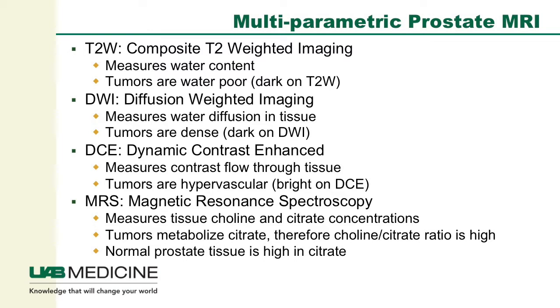Dynamic contrast enhanced scans are the third parameter used in multiparametric prostate MRI, whereby we measure the contrast flow into and out of the prostate gland tissue. Tumors are typically seen as hypervascular areas, or areas that are bright at a very early phase on the dynamic contrast enhanced scan. A specialized scan which is very functional is magnetic resonance spectroscopy, which is not used in all centers, but this mechanism allows for measurement of tissue levels of choline and citrate. These concentrations are then compared to one another in a ratio format, and typically normal prostate tissue is very high in citrate levels.